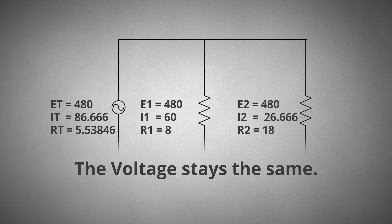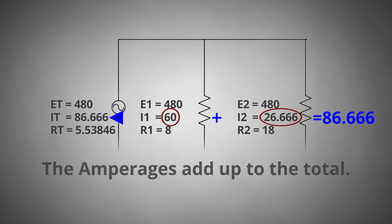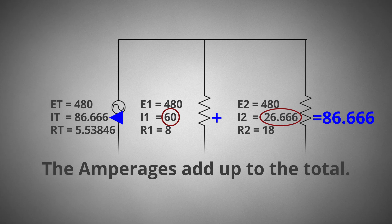As an electrician, parallel circuits are what we work on every day. If we were to test the voltage throughout any circuit, it would be the same. The amperages add up to the total. Parallel circuits have multiple paths for current to flow; therefore, the current in a parallel circuit is equal to the sum of the individual branches. In the field, we would add all the amperage together to size any circuit.